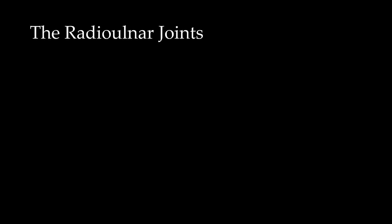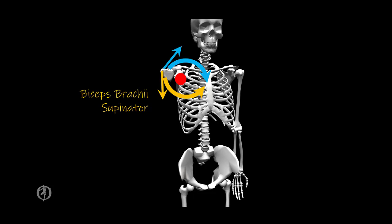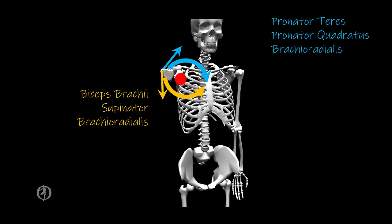Now let's take a look at the radioulnar joints. We have an oblique axis that will go through the radial head. Remember, it's the radius that rotates, so only muscles that are attached to the radius can create a torque that will either supinate or pronate the forearm. Any MTC that creates a force vector that is radial to the radius will create a supinator torque, while any MTC that pulls the radius ulnarly will create a pronator torque. MTCs that will supinate the radioulnar joints include the biceps brachii, the supinator, and the brachioradialis, while those that will pronate the radioulnar joints include the pronator teres, the pronator quadratus, and the brachioradialis.